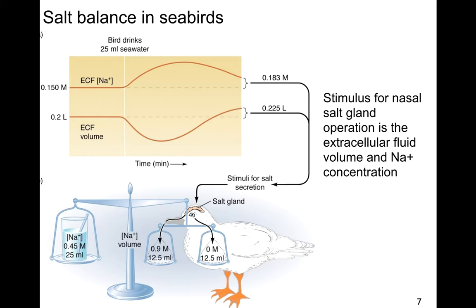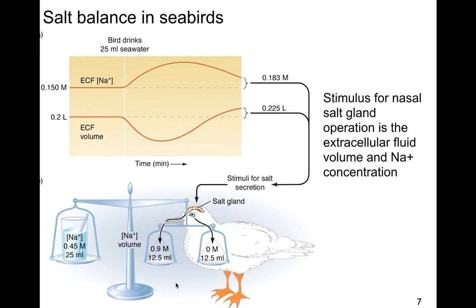How is this regulated? It's monitored through extracellular fluid volume as well as extracellular fluid sodium concentration. It's not running all the time because it's energetically expensive. When a bird drinks seawater, water moves from the extracellular fluid into the gut, reducing that volume and making the ECF more salty. When it hits a threshold, that's when the stimulus for salt gland operation kicks in and it starts to secrete the salty secretion — essentially salty snot — producing pure water as the water source for the marine bird.